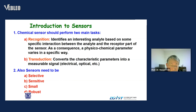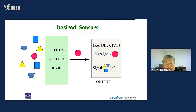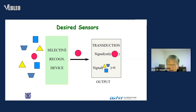We also need sensors to be very selective and sensitive, and their size has to be small and robust. I have a cartoon showing a desired sensor. On your left-hand side, I show various shapes and colors representing different ions or molecules. We have a selective recognition device, and in this case it senses only the red circle. The transduction part gives a signal only from the red circle, while signals from all other shapes and colors are zero — so the output produces signal from a single species only.